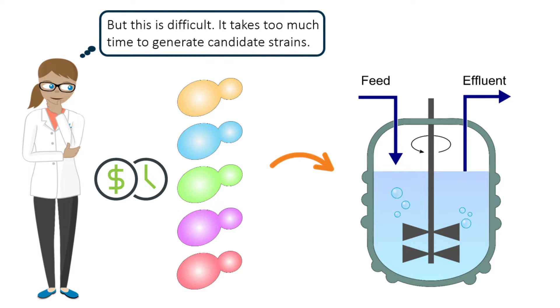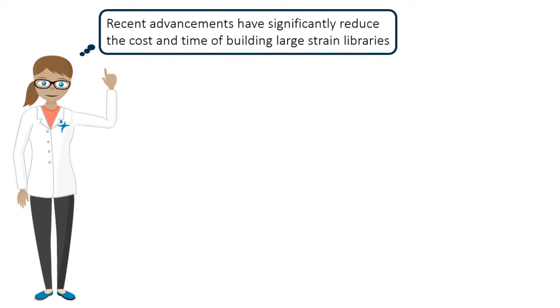This mismatch is one reason why these two optimization steps are separated in industry. However, recent scientific advancements have significantly reduced the cost and time of building large strain libraries.